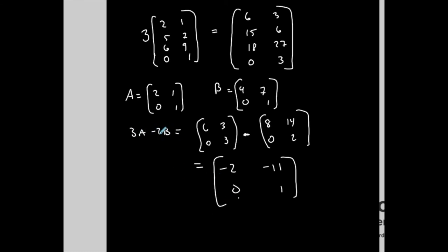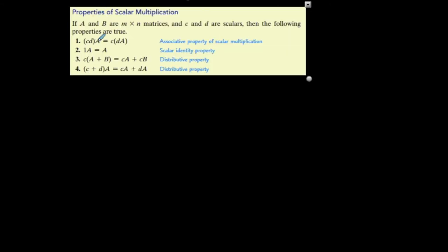And these are the properties of scalar multiplication. C and D are scalars, just numbers, and the large letters are just matrices. So if I'm multiplying two scalars c times d and then multiplying it by the matrix A, it's the same thing as doing the scalar d times A and then c.